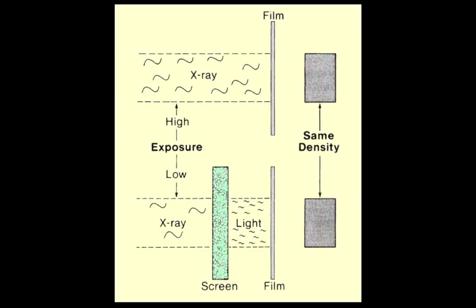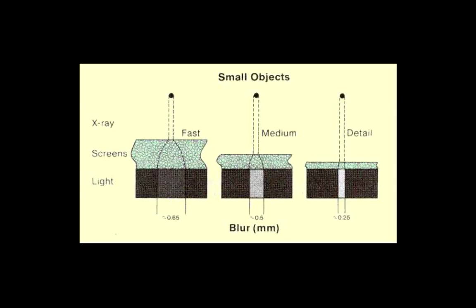Here we have an example with a lot of x-rays, a film, and a resulting density — with no screen. Moving lower, we use a lower amount of x-rays represented here with a screen. That screen amplifies the x-rays, turning them into light which the film is very sensitive to, and we achieve the same density as before while using a lower amount of x-rays. But adding that screen comes with a cost: blurring, which affects spatial resolution.